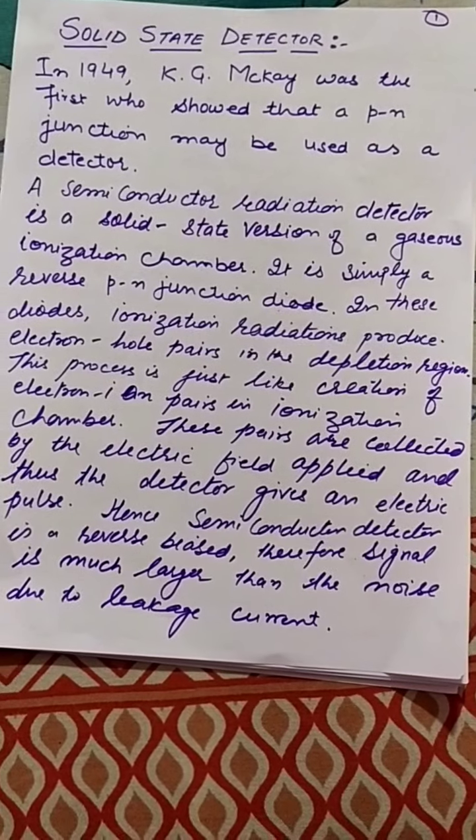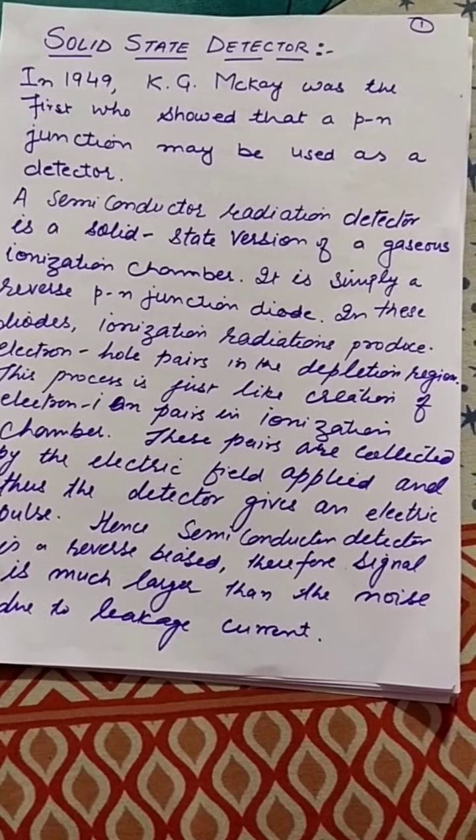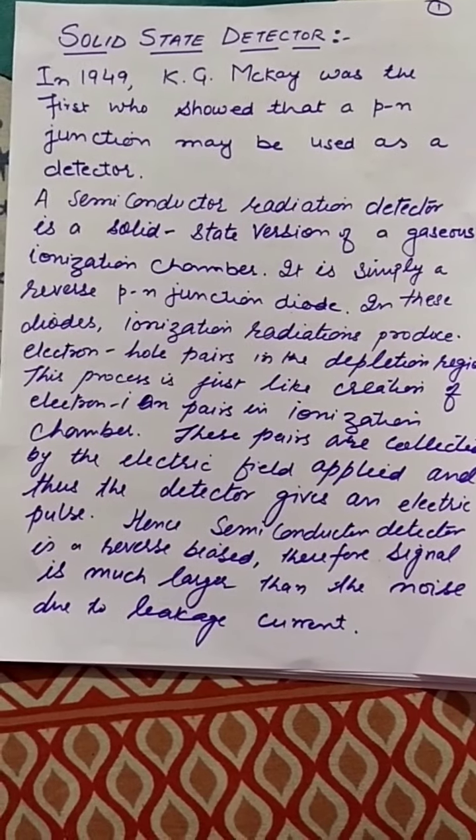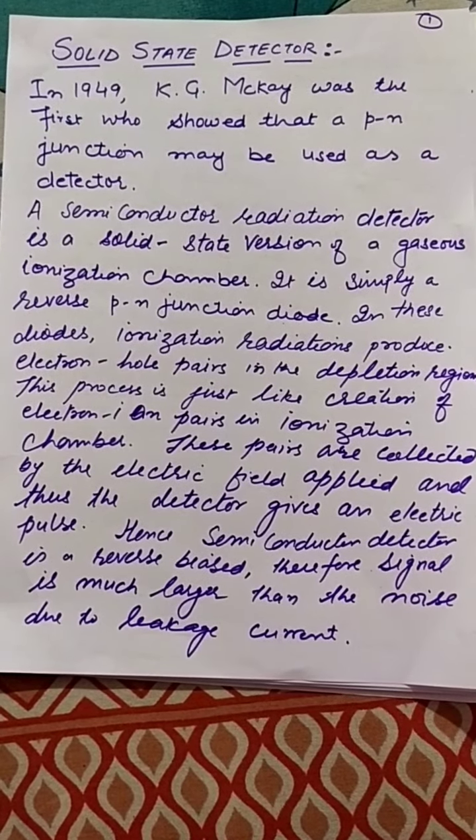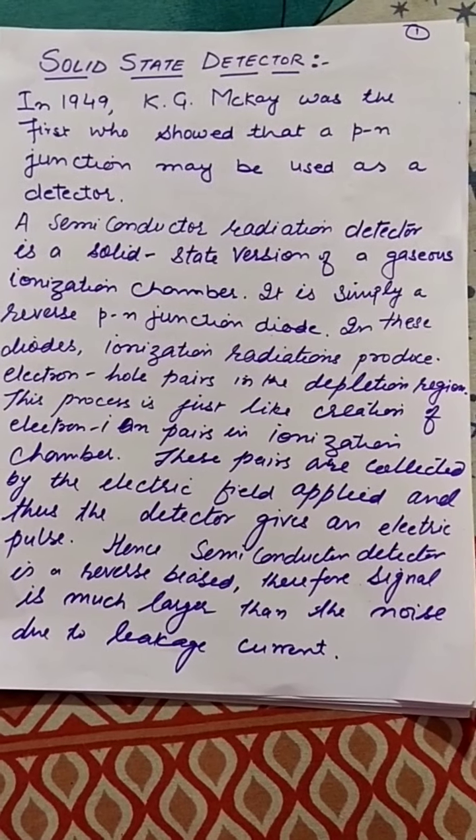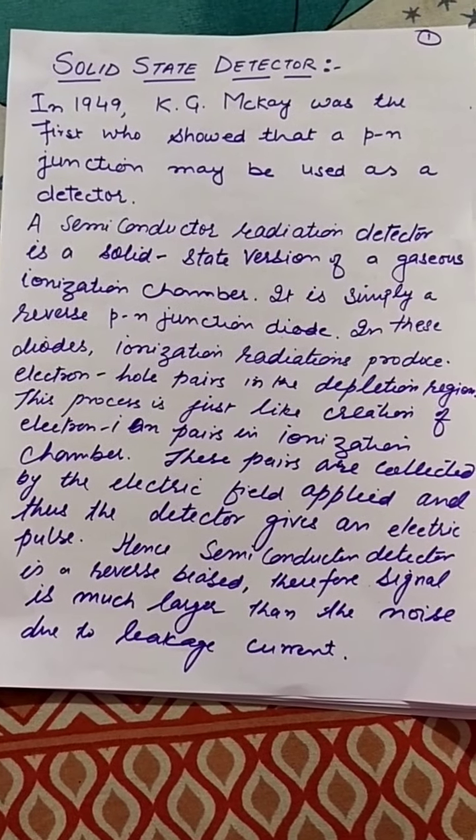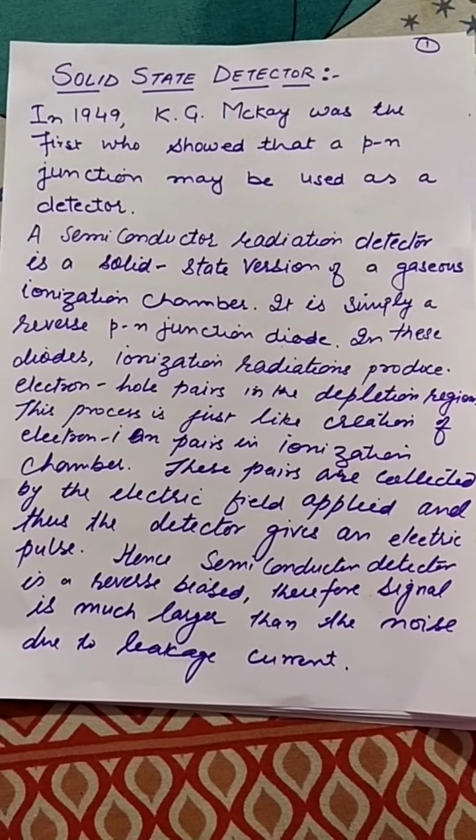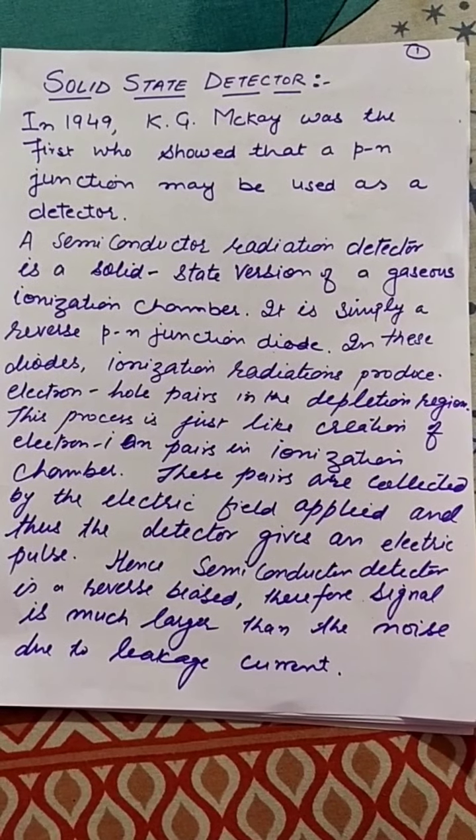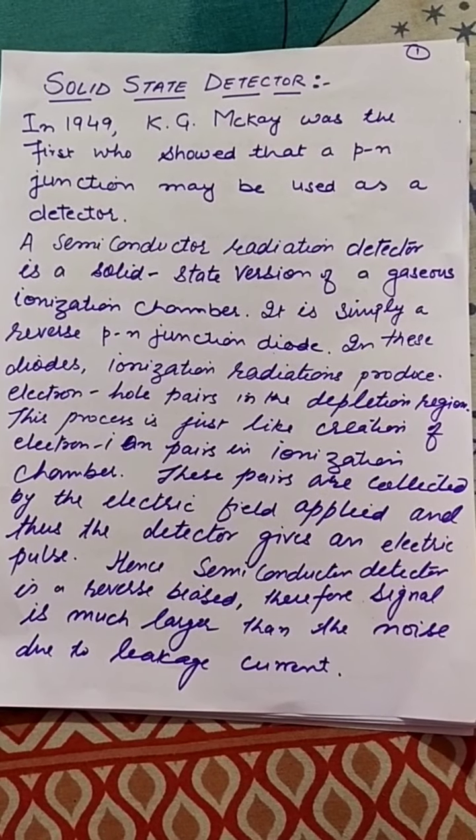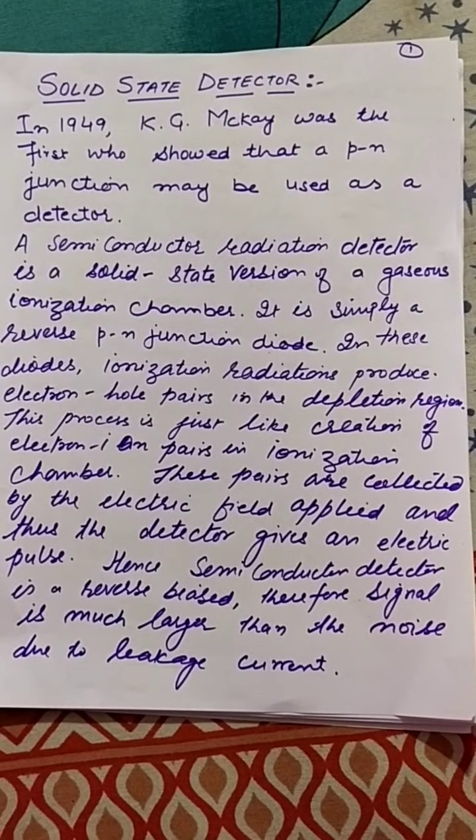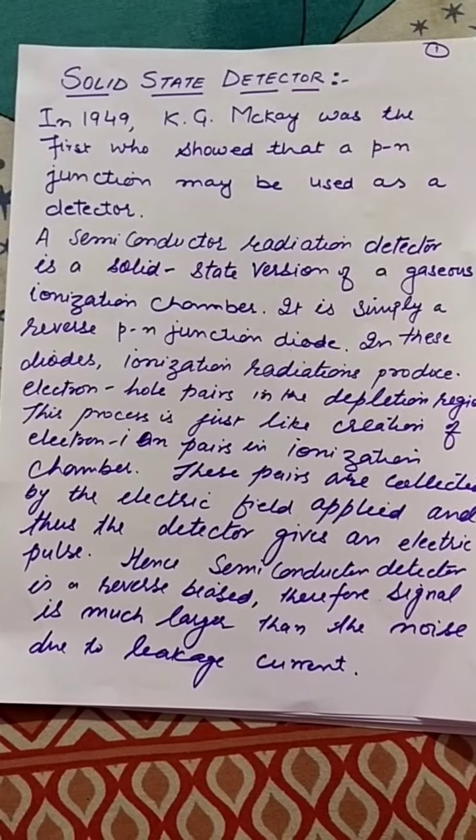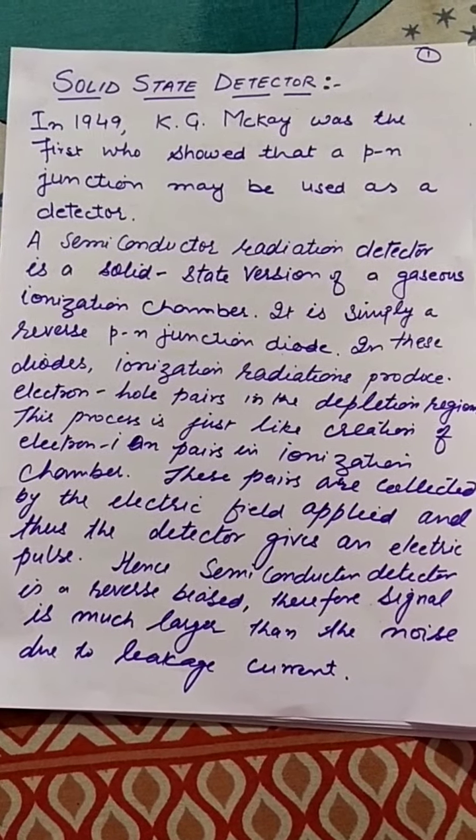It is simply a reverse biased PN junction diode. In these diodes, ionizing radiation produces electron-hole pairs in the depletion region. This process is just like creation of electron-ion pairs in an ionization chamber. These pairs are collected by the electric field applied, and the detector gives an electric pulse. The amplitude of this pulse is proportional to the energy of ionizing radiation.